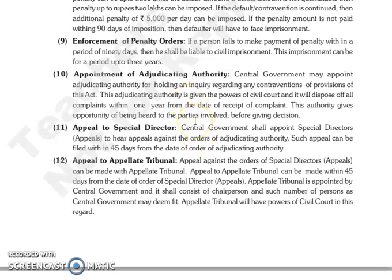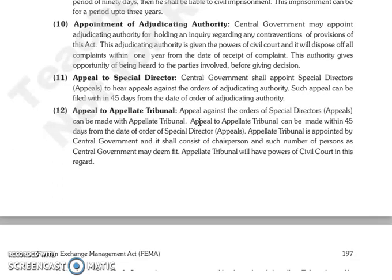The next is appointment of adjudicating authority. जो central government है वो appoint कर सकती है adjudicating authority for holding an inquiry regarding जो भी contravention हुआ है provisions of the act. जो adjudicating authority है उसके पास powers है civil court की, वो dispose off करेगी सारी complaints को within one year जिस date से उसे receive हुई है complaint. और यह जो authority है उसके पास right है कि वो opportunity of hearing देगी parties जो involved है उसमें, अपना decision देने से पहले.